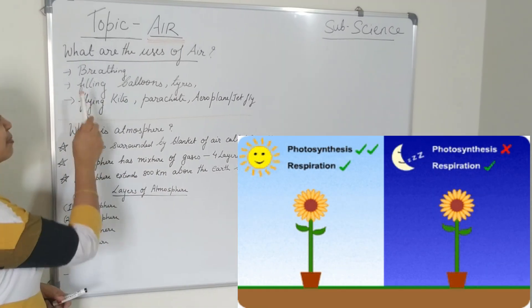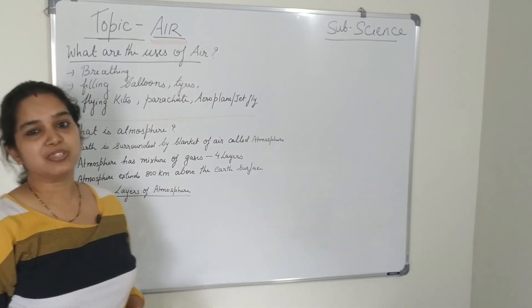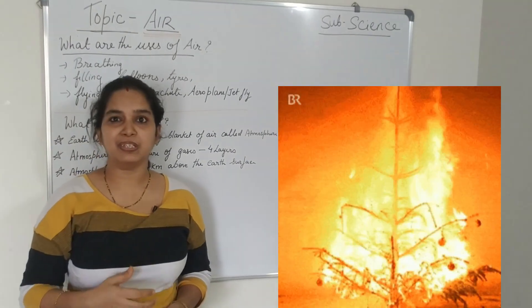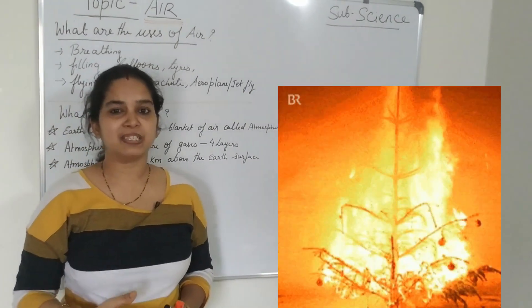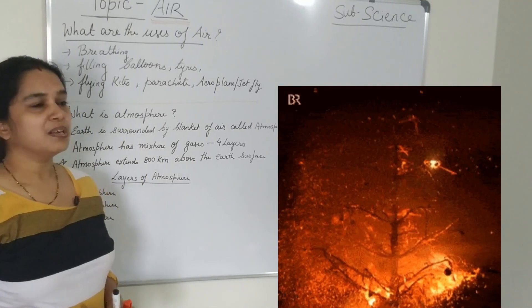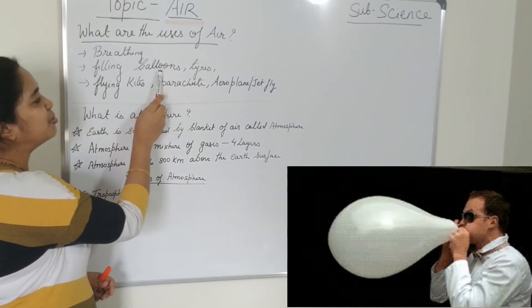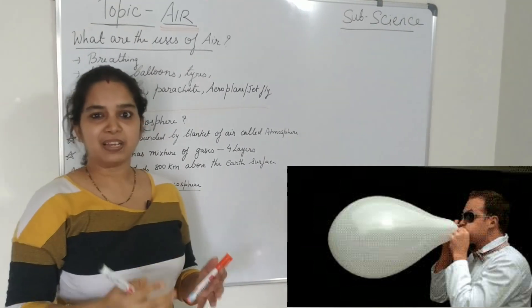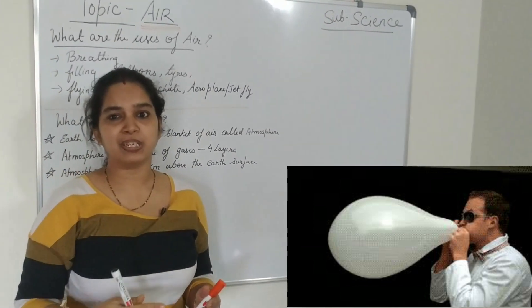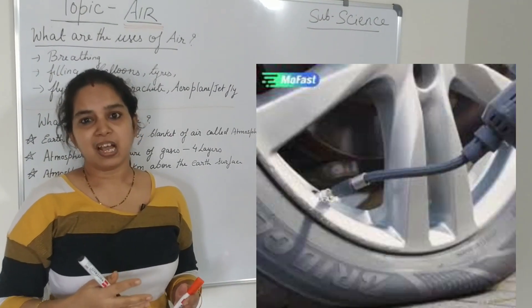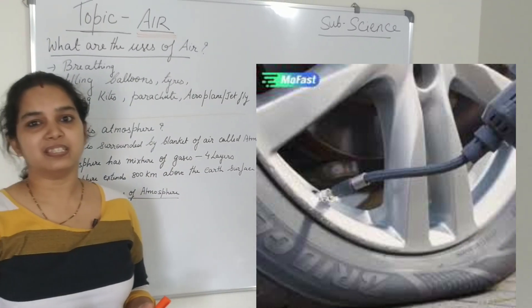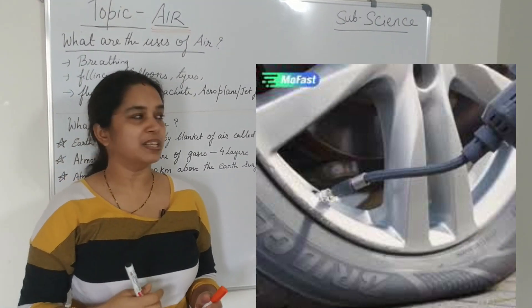So air is used for breathing. Also it is used for the combustion, that is the burning. The oxygen basically present in the air is used for burning. The air is also used for filling balloons and tires. You use balloons during the birthday parties and the tires of the cars and other vehicles, they use air for filling it.